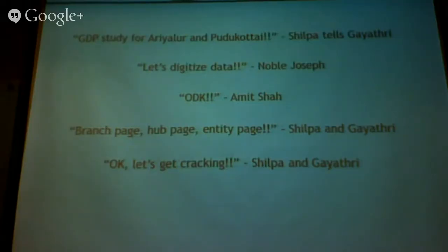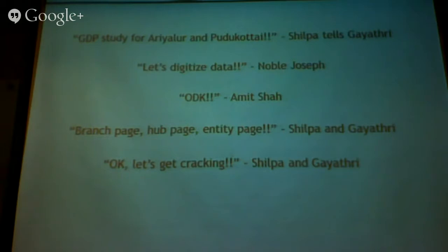We wanted to do a lot of crazy things — like we wanted to have a branch page, a hub page, and an entity page. This is a web page showing MIS: what are popular occupations in this branch, what is the infrastructure available, what is the population this branch services? Everything on one page. Till now, we did not have this in a digital form.